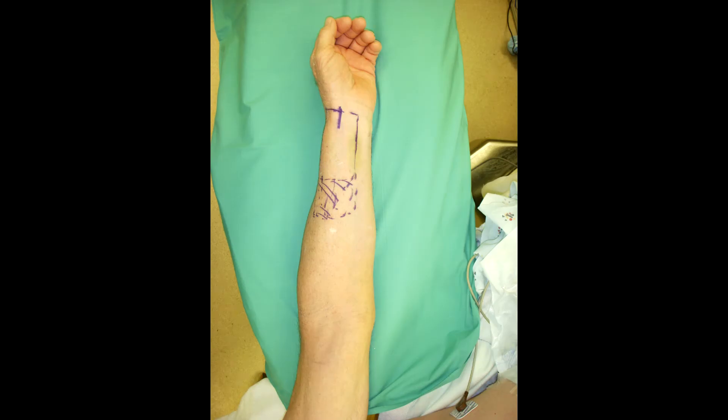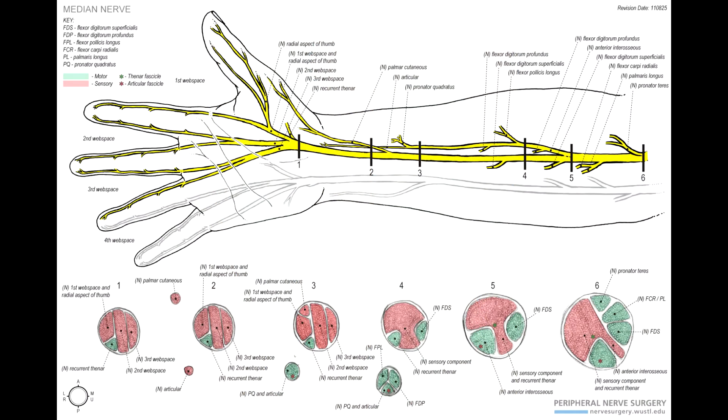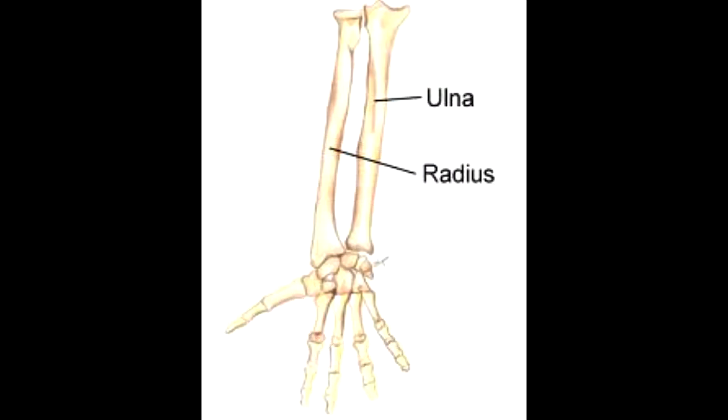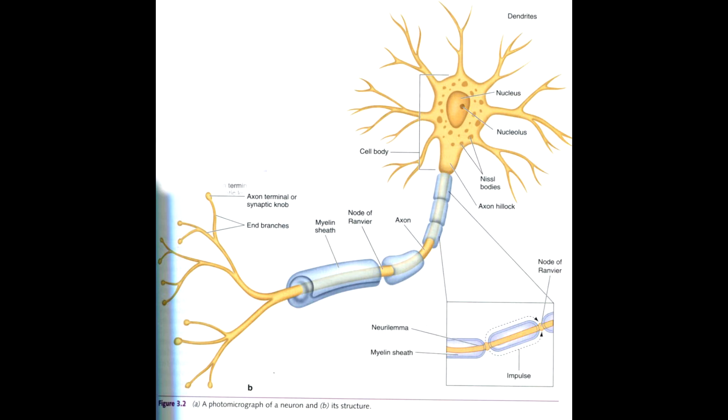In the forearm, there are three major nerves: the median, radial, and ulnar, which both connect motor and sensory axons with various funiculi.